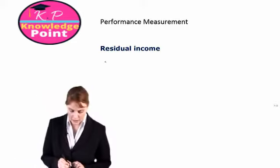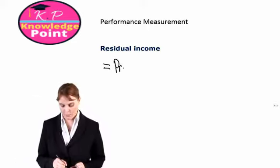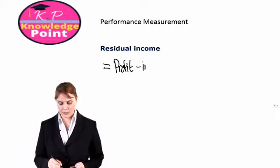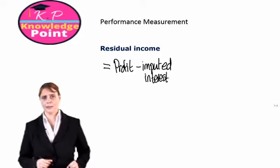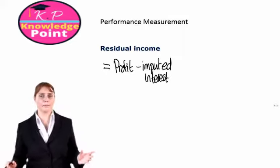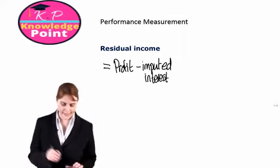Residual income is calculated as our profit minus something called imputed interest. Don't panic, this sounds like something complicated. It's very easy to calculate.